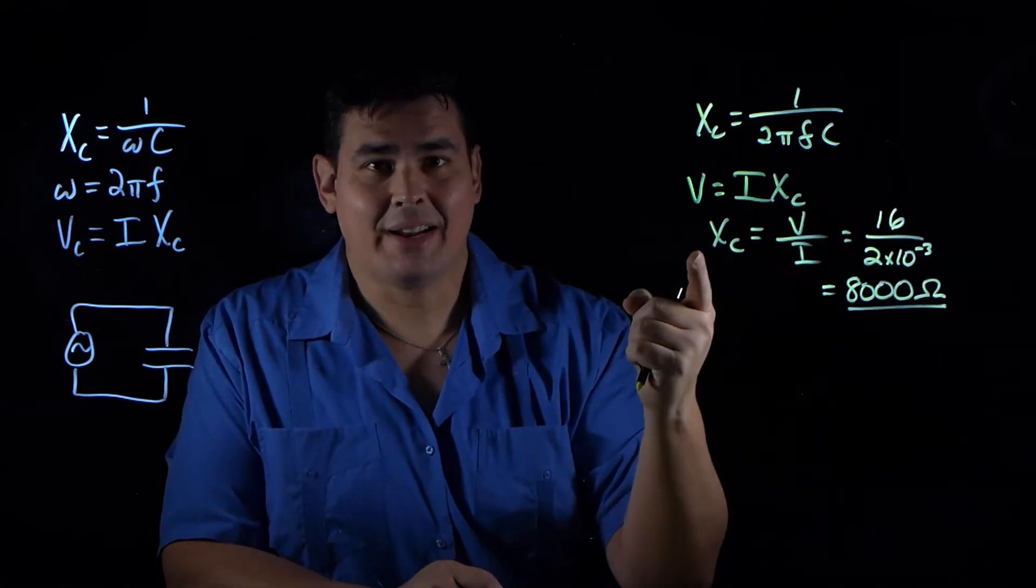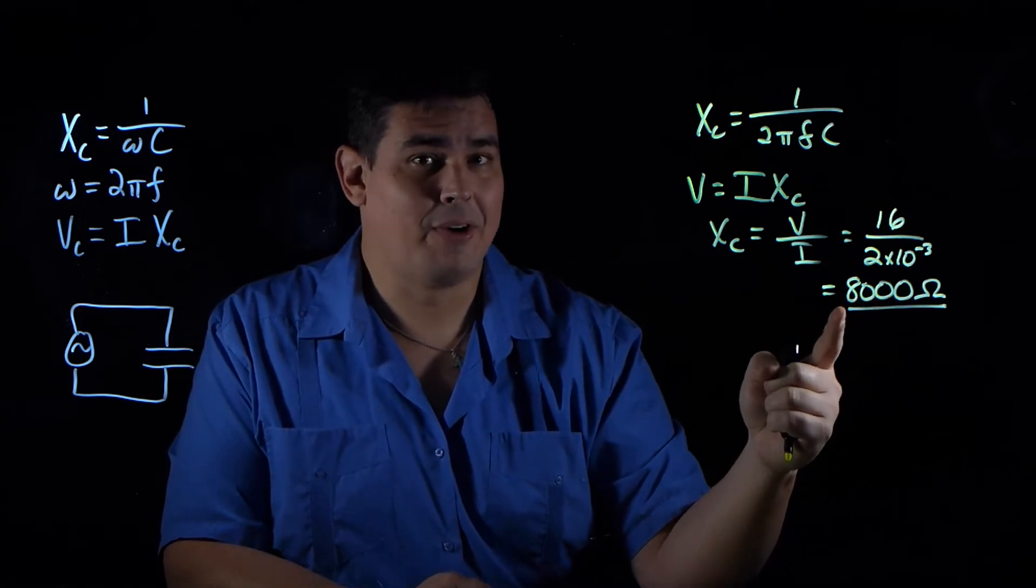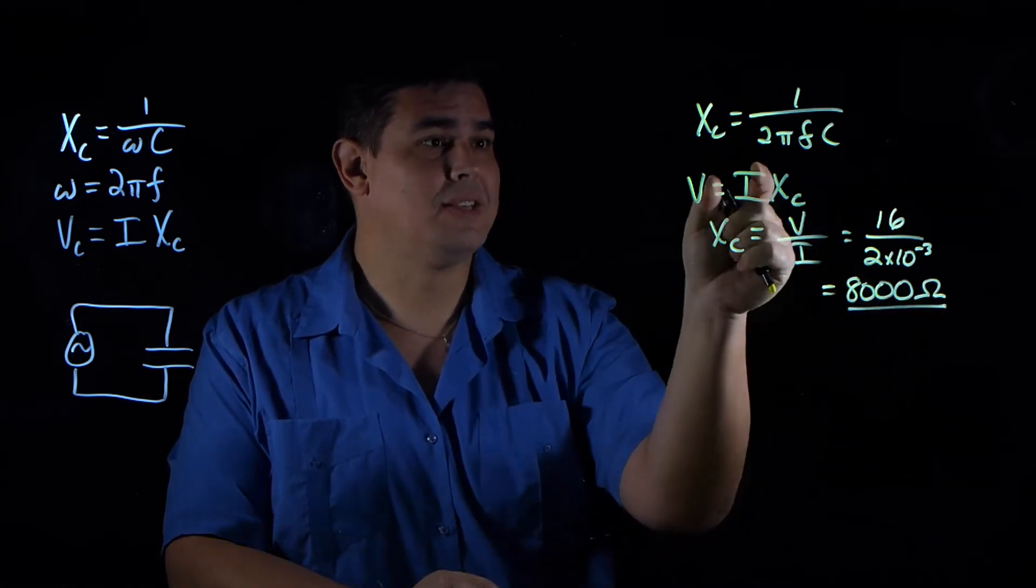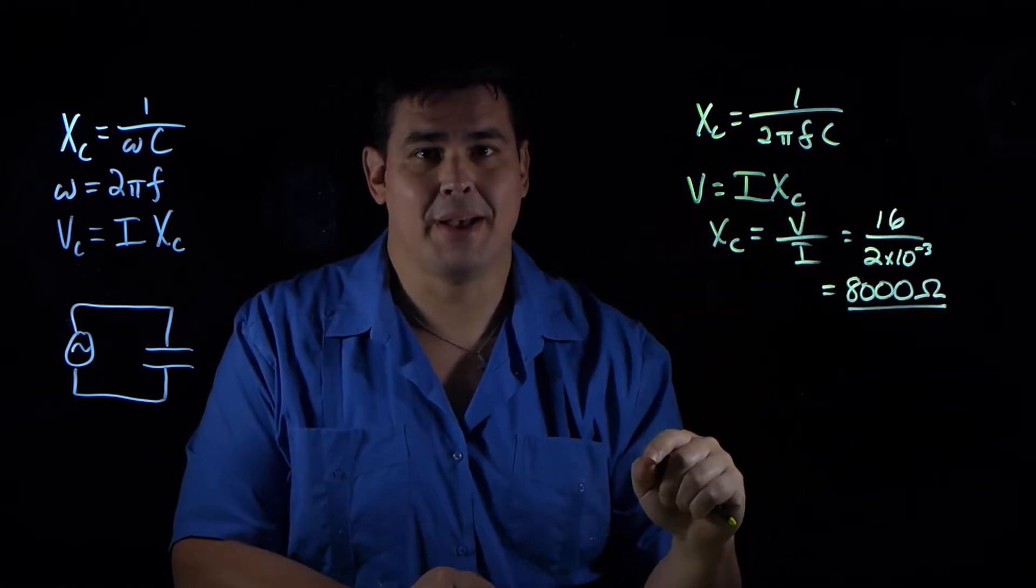So now that I have the reactance, I've got 8,000 Ohms for my reactance. So now I can take this, and I can plug this in here, and I can solve for the capacitance.